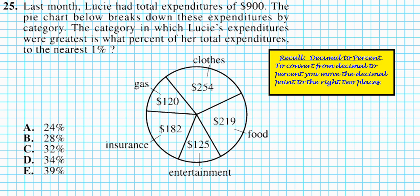Let's take a look at 25, the last problem in this review installment. It reads: last month, Lucy had total expenditures of $900. The pie chart below breaks down these expenditures by category. The category in which Lucy's expenditures were greatest is what percent of her total expenditures to the nearest percent.